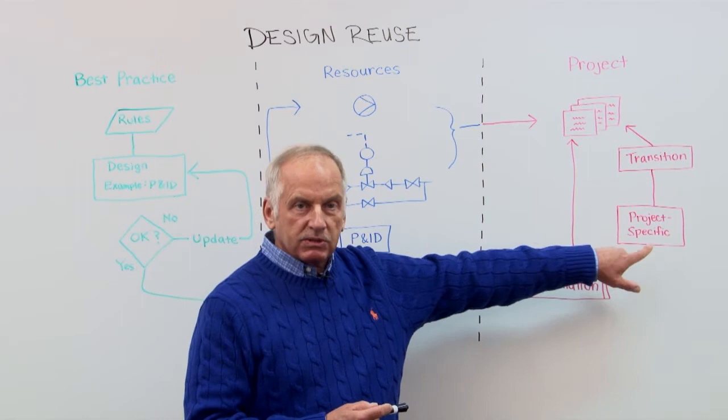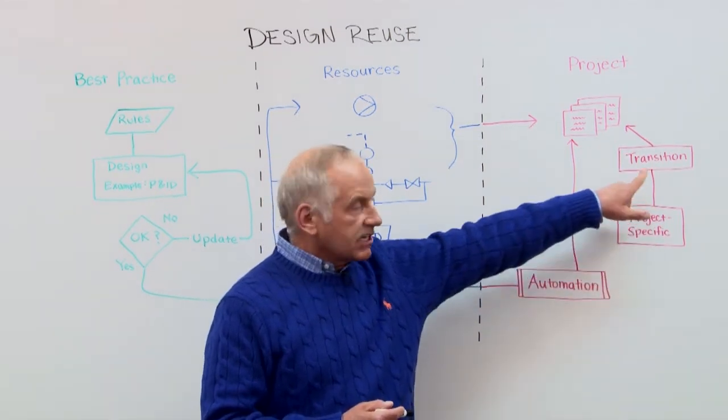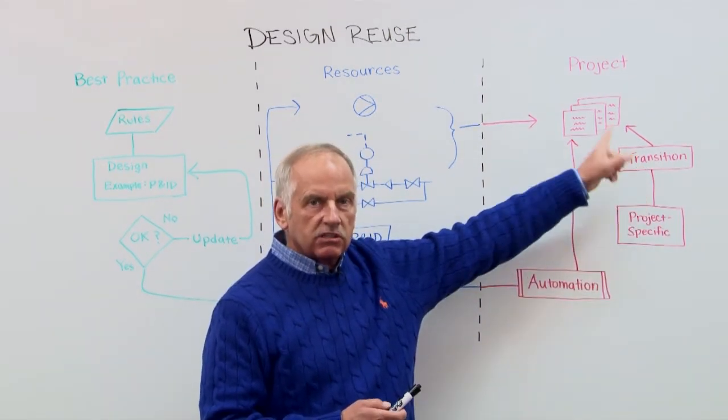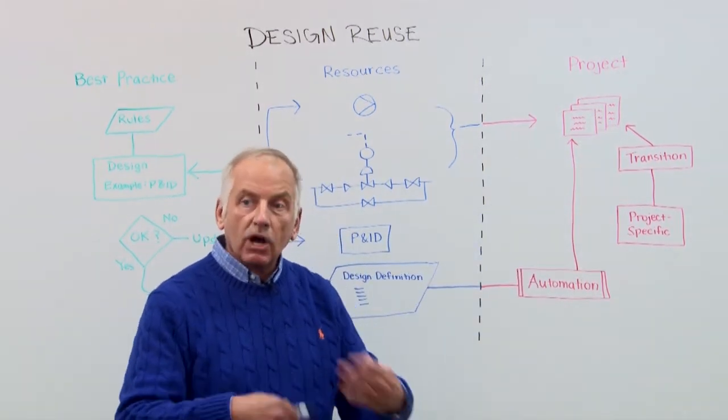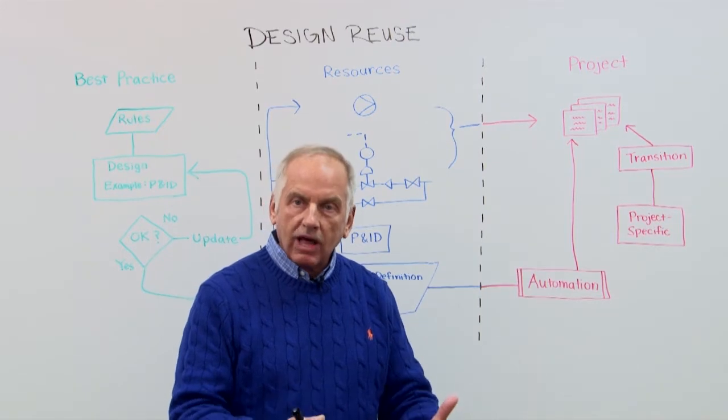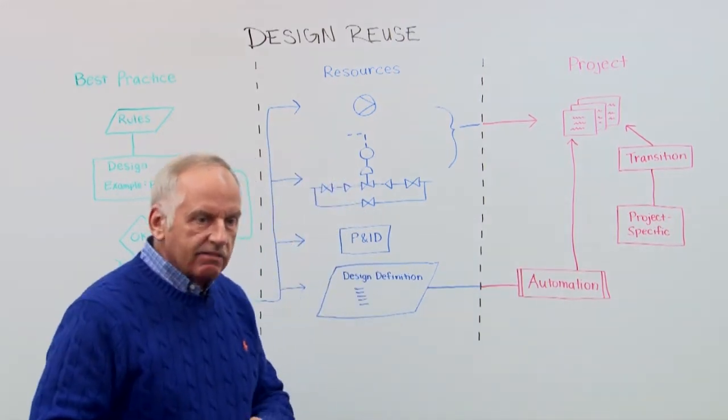Now what you can do is you have your project specifics here that you can actually execute. We call that transition against that copy design. So in that case, process data, tag numbers and so on will be updated automatically, and voila, now you have your design reuse.